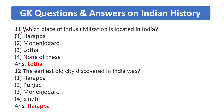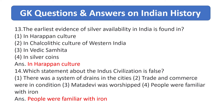Which place of the Indus civilization is located in India? Answer is Lothal. The earliest old city discovered in India was answer is Harappa. The earliest evidence of silver availability is found in answer is Harappan culture. Which statement about the Indus Valley civilization is false? Answer is that people were familiar with iron.